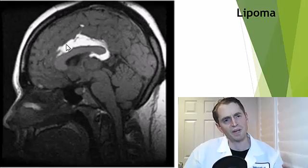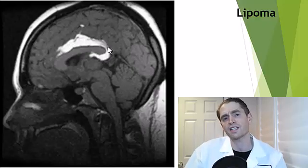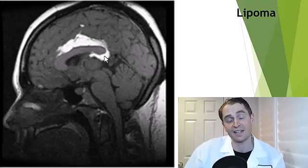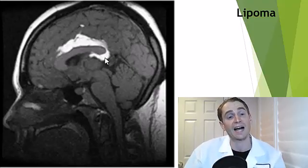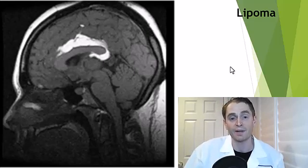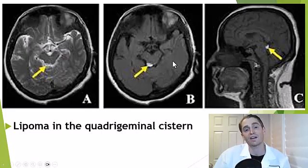This midline structure surrounding the corpus callosum is very T1 bright, just like subcutaneous fat, because it is fat. This is a benign lipoma — a very common location at the midline. You can also get them posterior to the midbrain in the area of the quadrigeminal cistern.